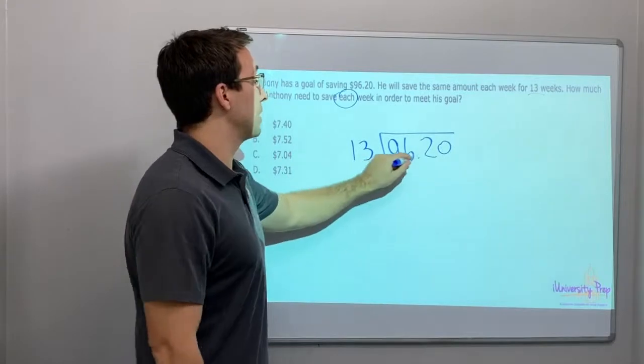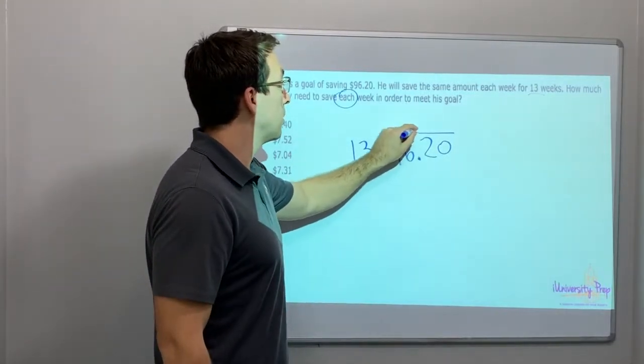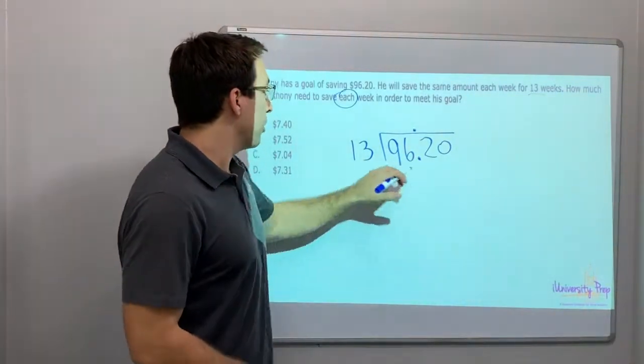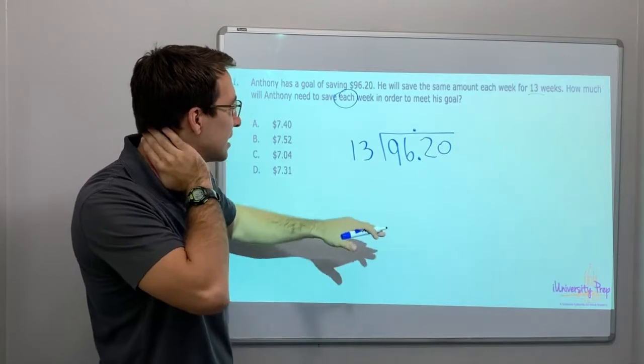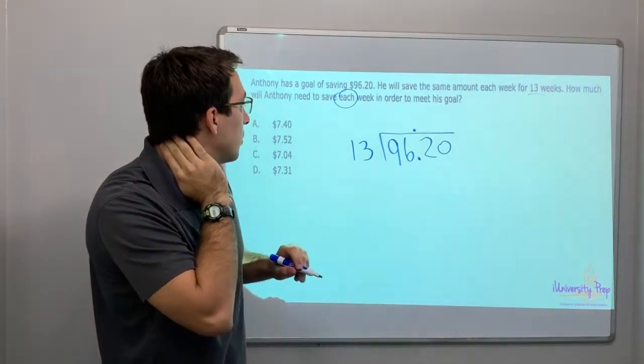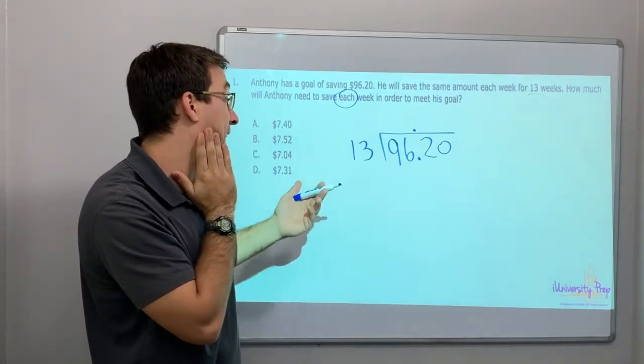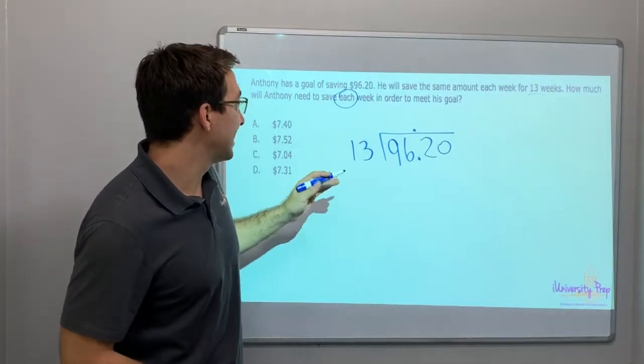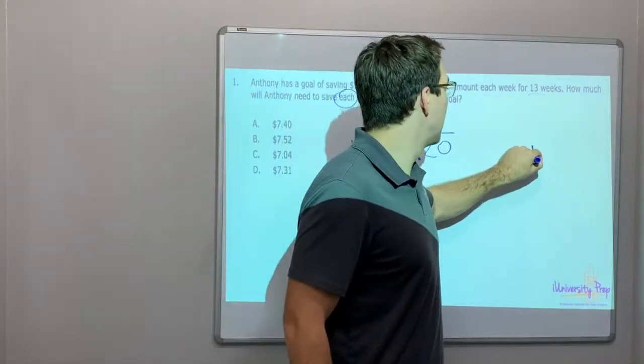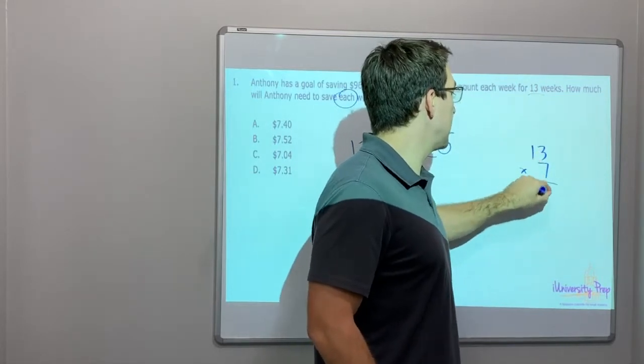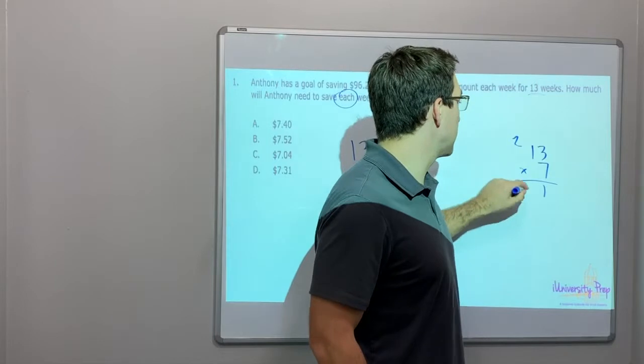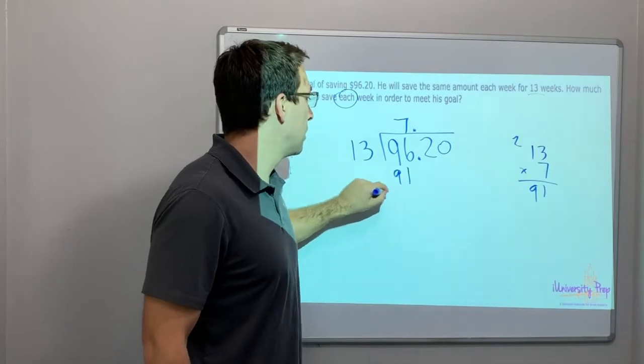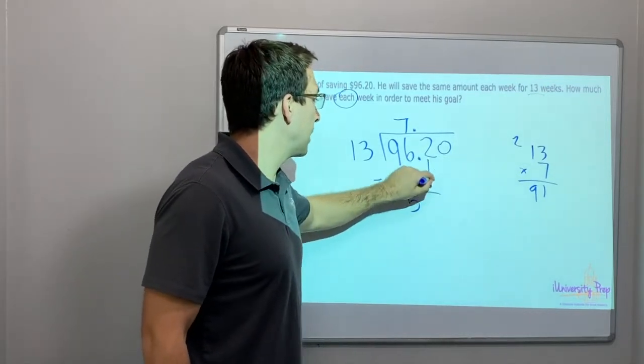Here's the lesson: before we start the question, we have to raise the decimal. Here's the decimal - when you're dividing a decimal, you just raise the decimal and that's where it stays. 13 times what equals 96? 13 times 7 is 91, that's it. 13 times 7 is 91, minus, so 5, bring down our 2.